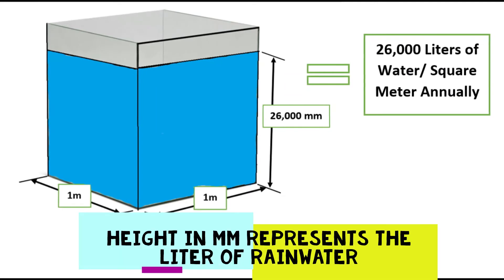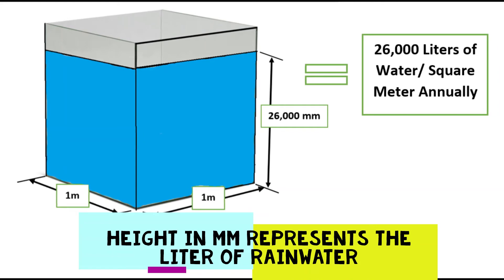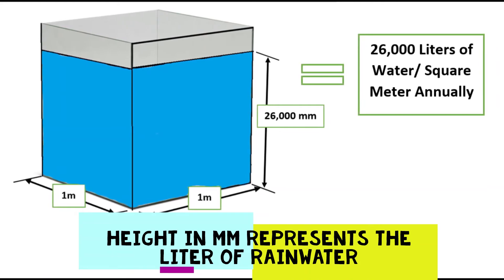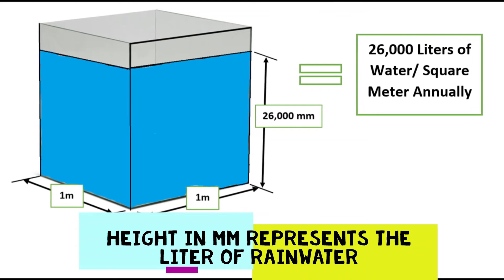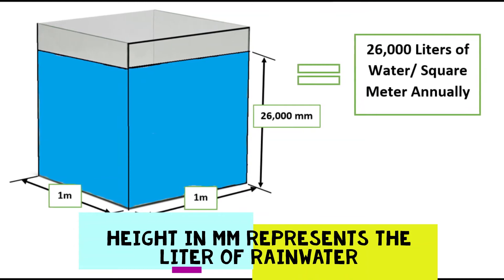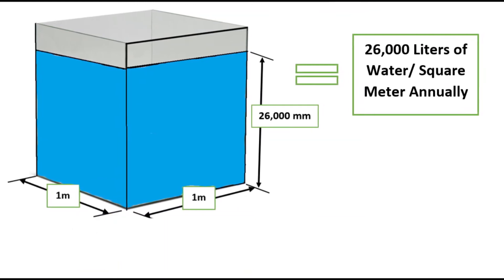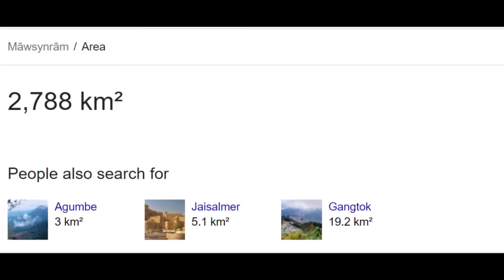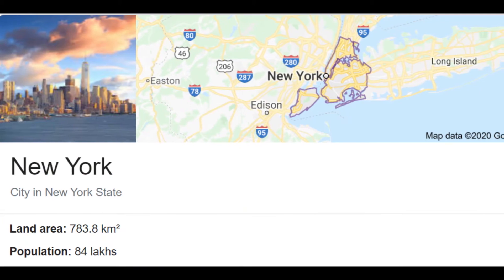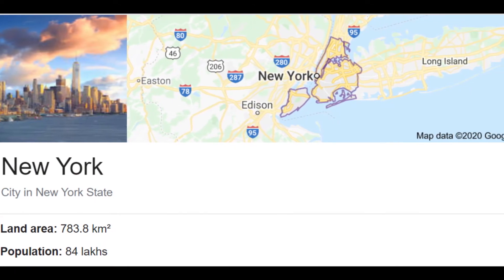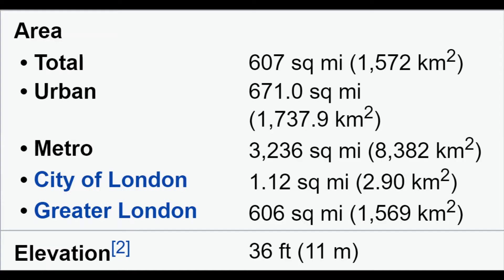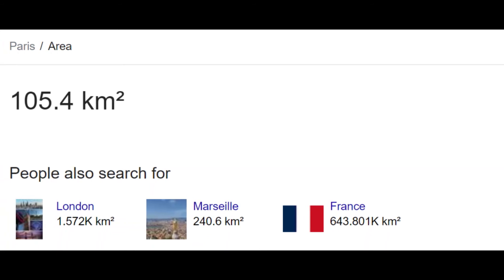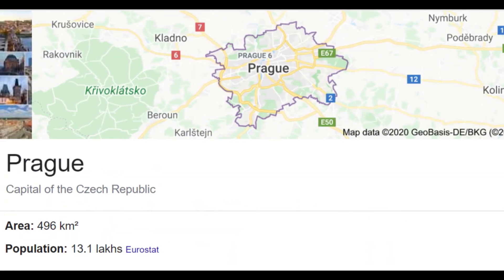On average, it rains about 12,000 millimeters there, but in the year 1985, it rained 26,000 millimeters, which means 26,000 liters of water per square meter. The thing which is astonishing is that Mawsynram is not some small village — it is 4 times the area of New York, almost twice the size of London, 25 times the size of Paris, and 4 times the size of Prague.